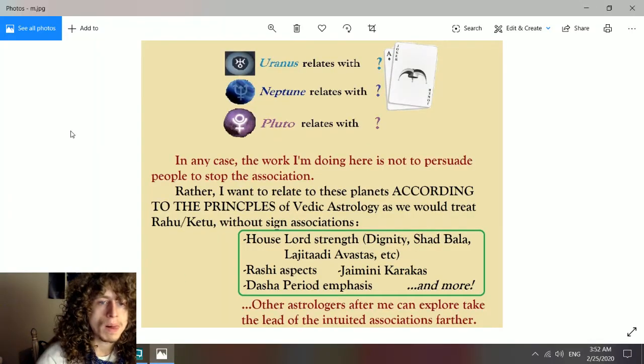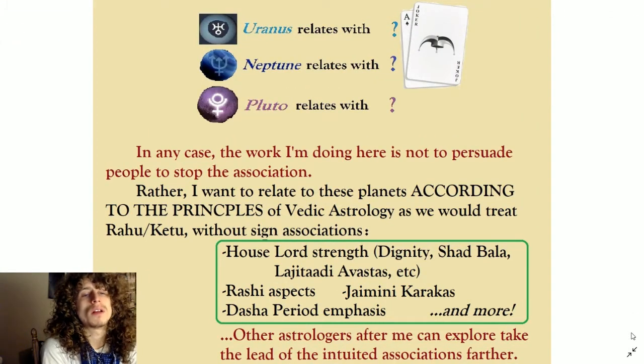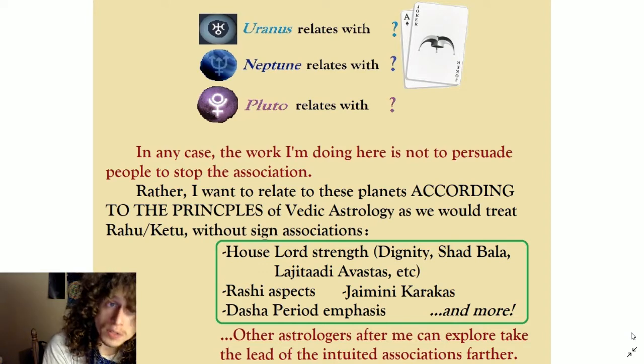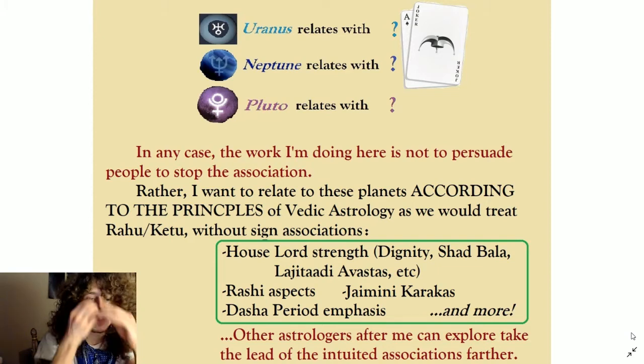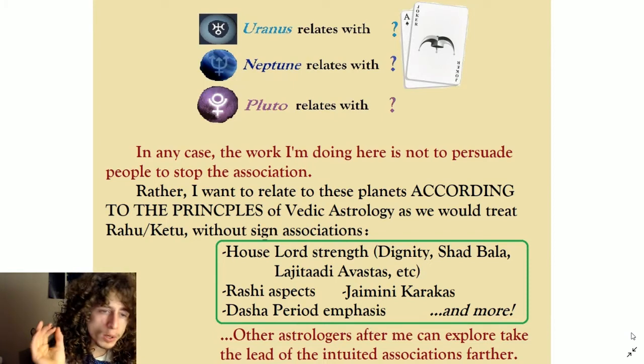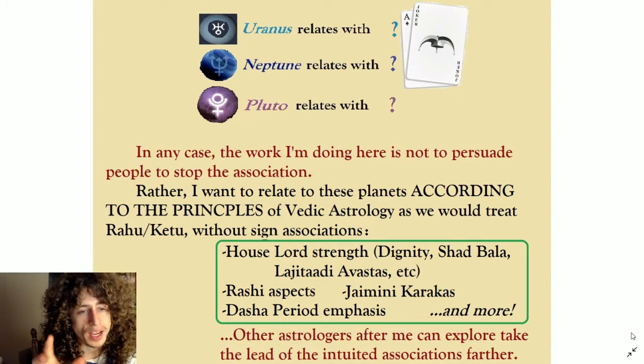I can't wait to talk about Rahu and Ketu more, because I'm right stewing on it right now in my apprenticeship with Ryan Kirksack. The work I'm doing here is not to persuade people to stop associating Uranus with Aquarius — don't stop in your own research if that's where you're going and if that's where your research is taking you. Listen to your heart. But for my purpose, as someone who is a cross-cultural instigator, I want to relate the outer planets according to the principles of Vedic astrology, as we would treat Rahu and Ketu without sign associations — just to see what's there.